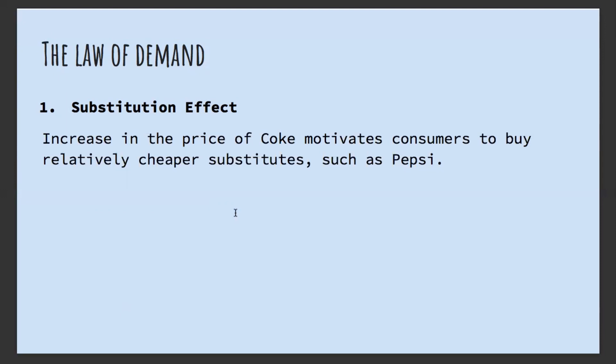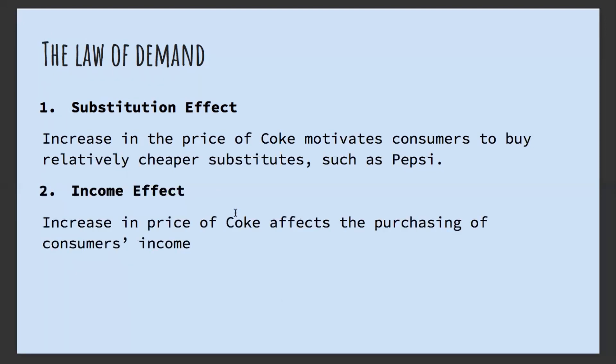Another effect is the income effect. An increase in the price of Coke will affect the purchasing power of consumers. Basically, if the price of Coke increases, I will buy less of it because with my income I can afford less. And if the price of Coke decreases, I can buy more of it because my income is the same but the price is lower, so I have more purchasing power.